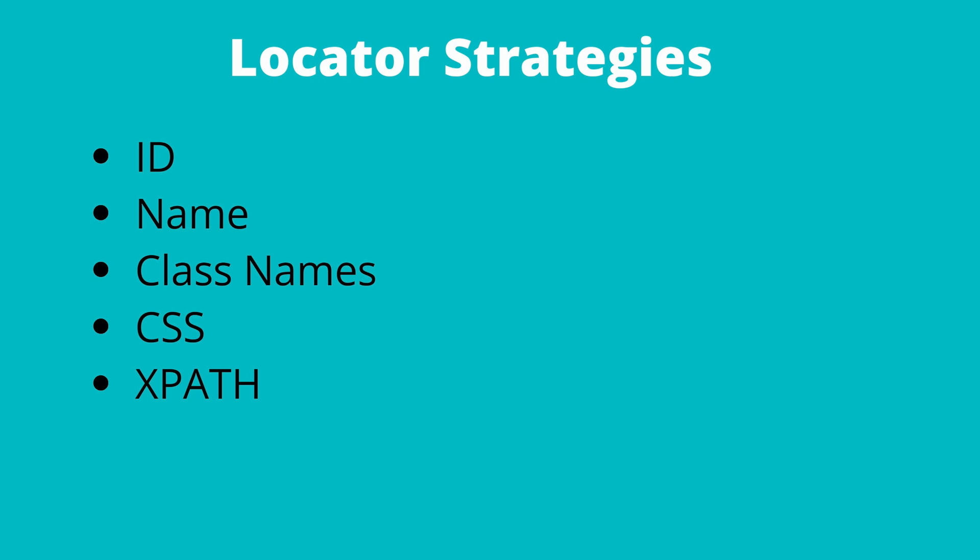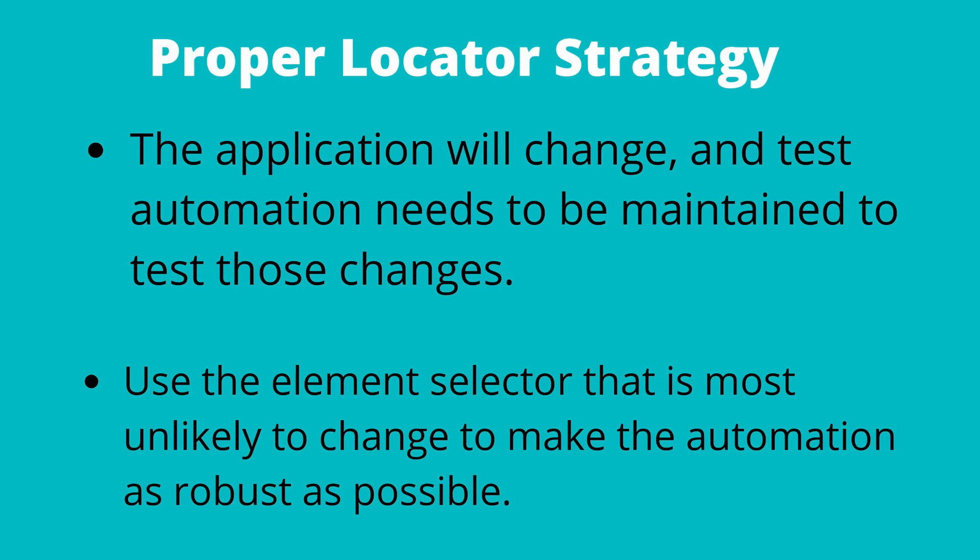We will get into those individually later on in this series. In test automation, proper locator strategy is very important. The application can change and will change. Test automation will need to be maintained to test for those changes. If you do not use proper locator strategy, it will result in a lot of flaky tests and tests that break as soon as an application change or the elements on the web page change.